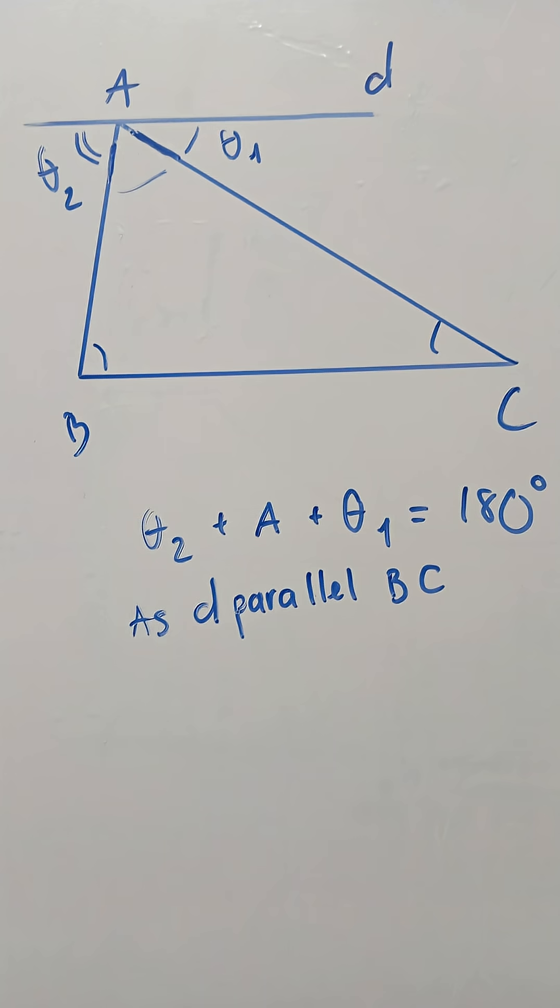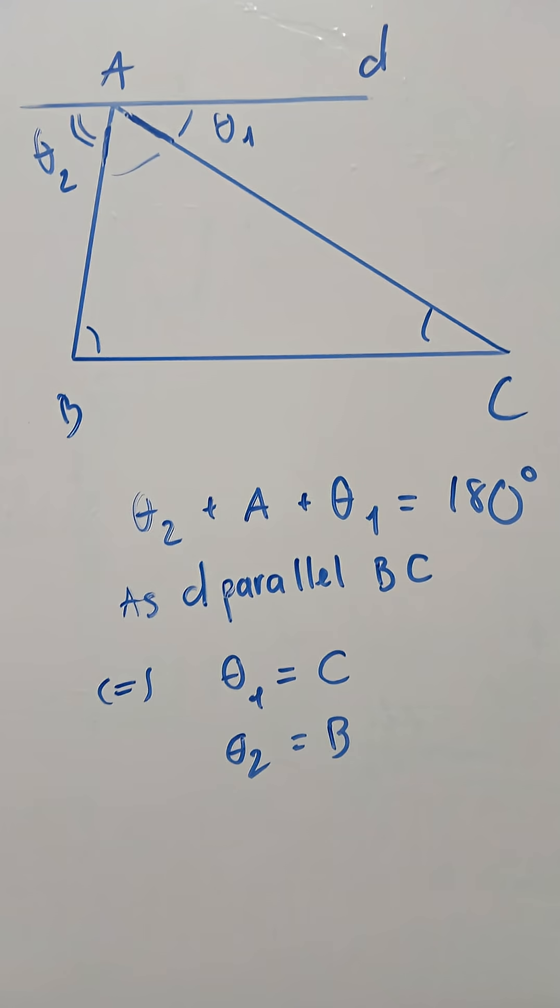But as the line D is parallel to BC, so the angle theta number 1 is equal to the angle of C, and the theta number 2 is equal to the angle of B.